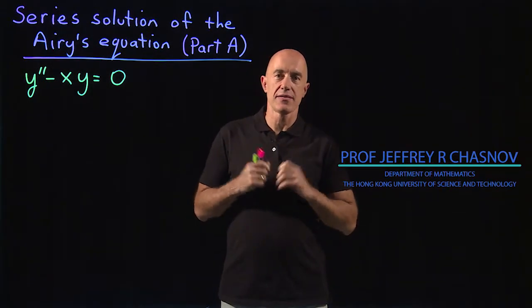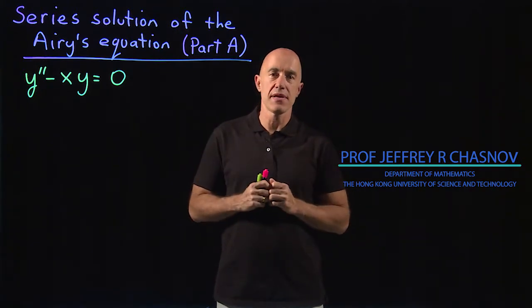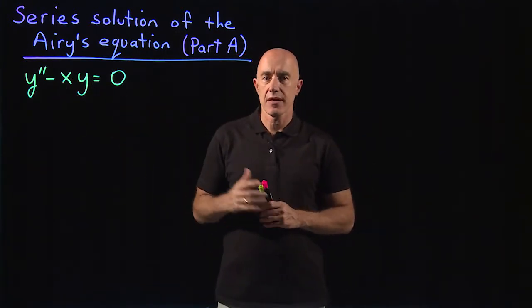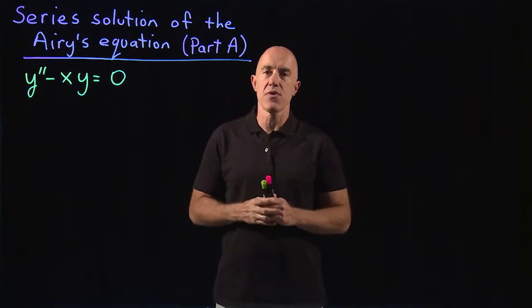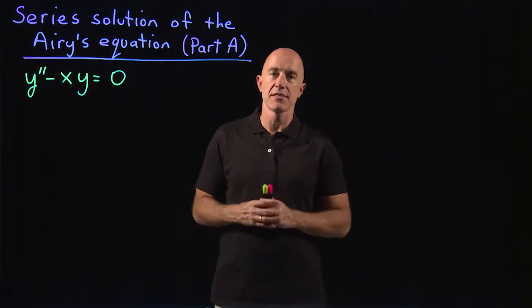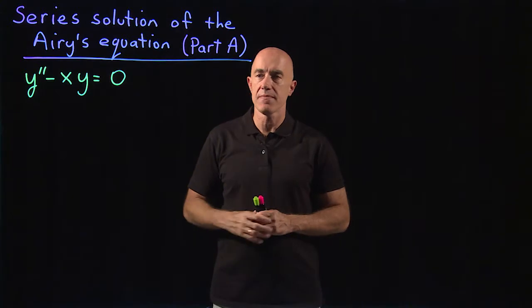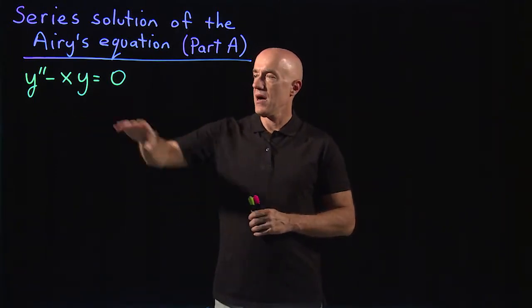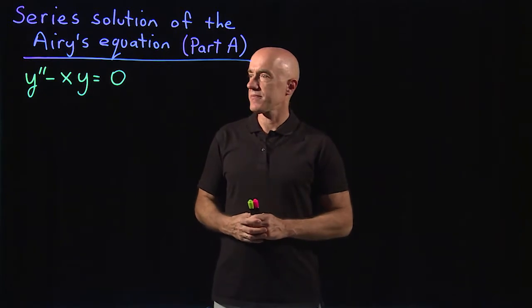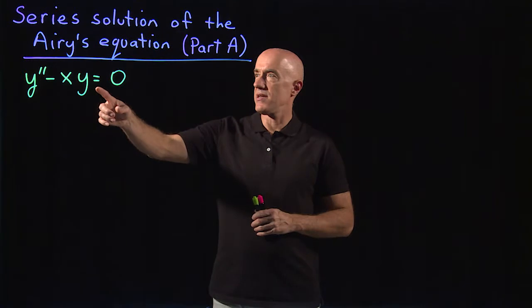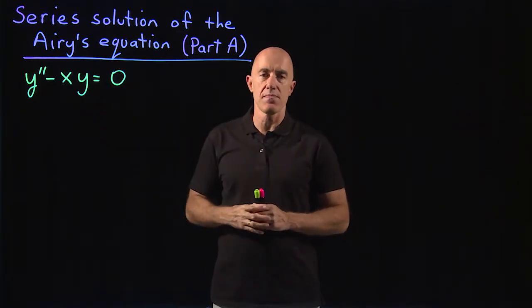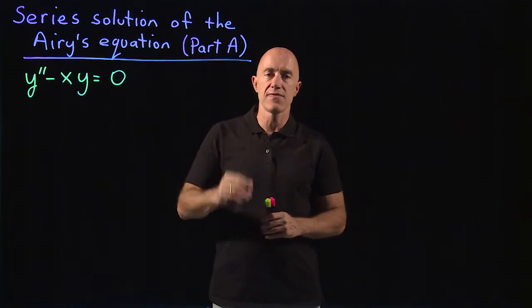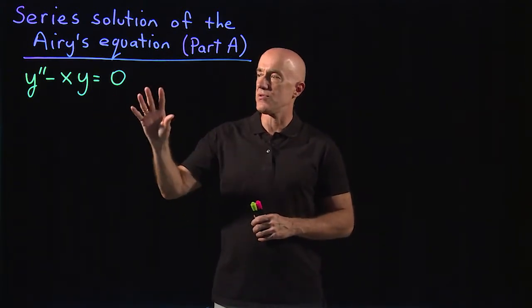In this video we'll do a series solution method on an equation that we don't know how to solve: y double prime minus xy equals zero. This is a difficult — essentially impossible — equation to solve using previous Ansatz methods, because of the non-constant coefficient x. The exponential Ansatz is not a solution, so the only options are a series solution method or a numerical method. In this video I'll cover the series solution method, and in the next video I'll show the numerical solution.